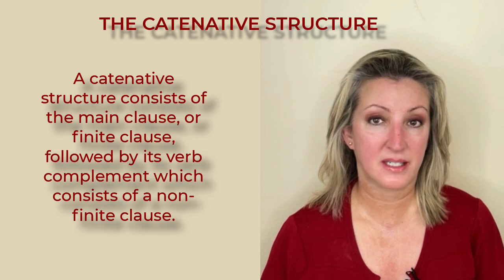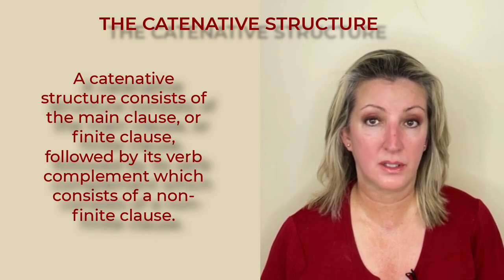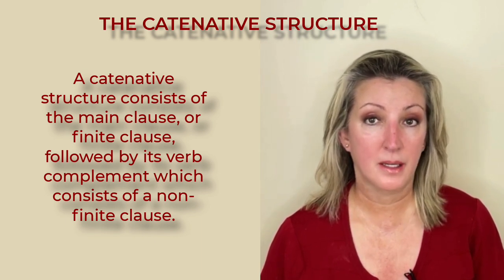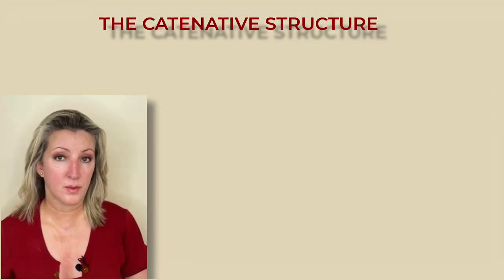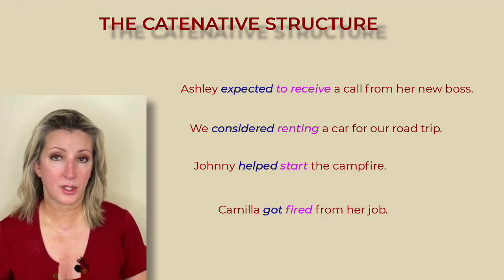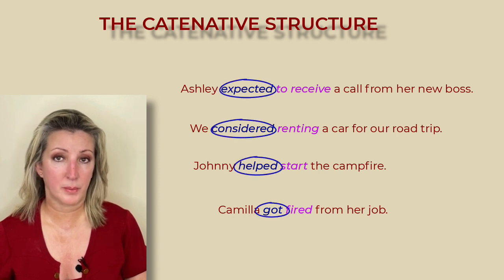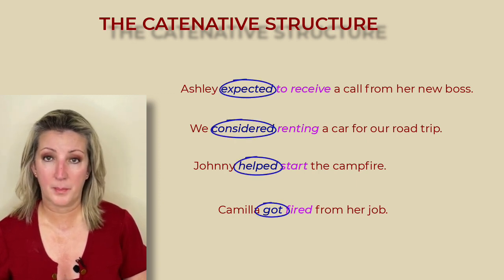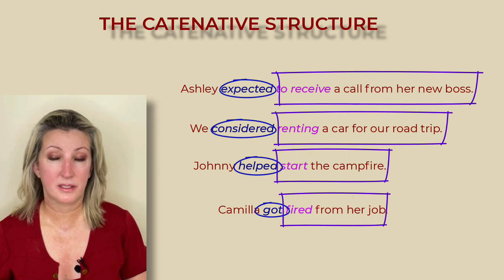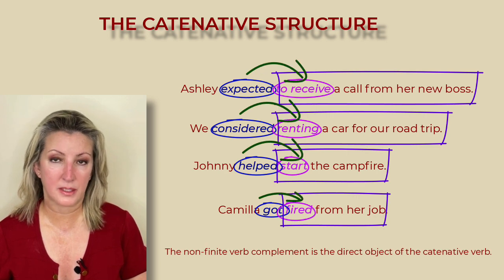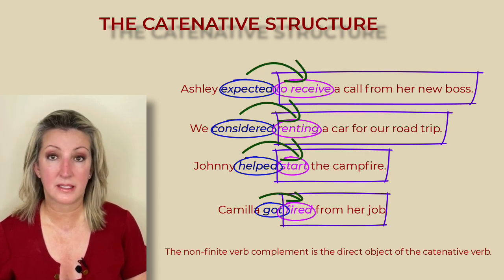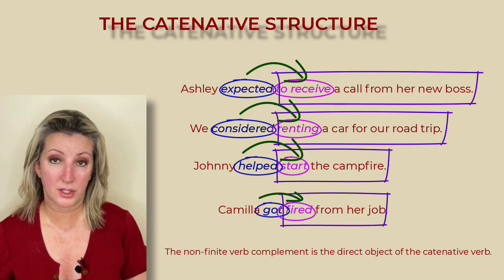A catenative structure consists of the main clause or finite clause, followed by its verb complement, which consists of a non-finite clause. In other words, in a catenative structure, you will see a catenative verb plus a non-finite complement. This non-finite clause does not show tense. The second verb or any clause it introduces is the direct object of the catenating verb. This means that you will see a chain of at least two verbs in a catenating structure.